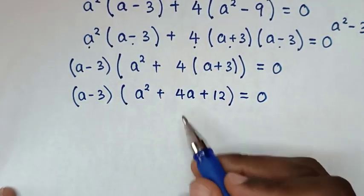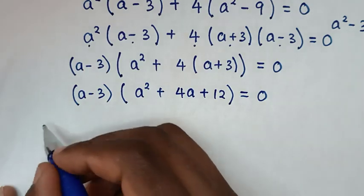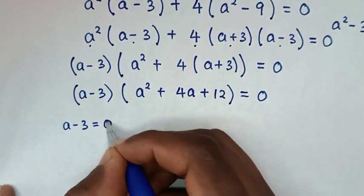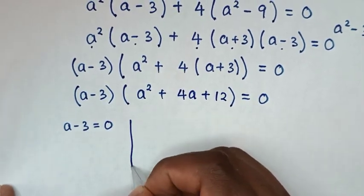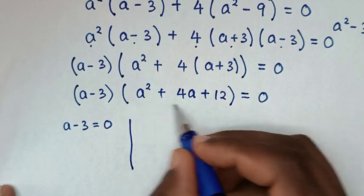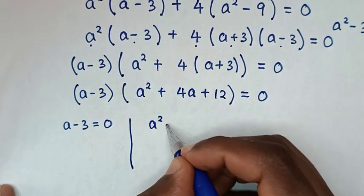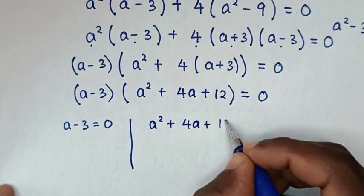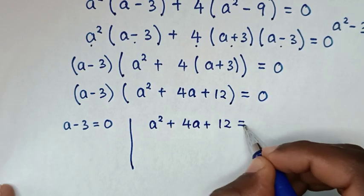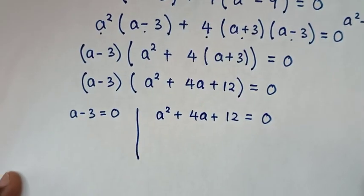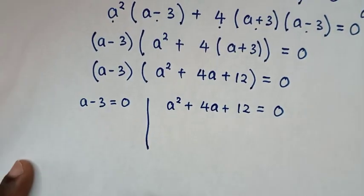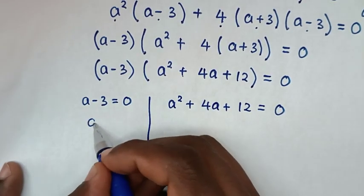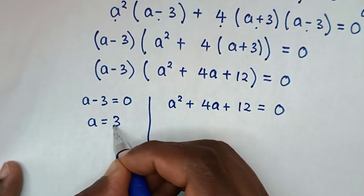From here we have two solutions. The first solution is a minus 3 equals 0, and the second solution is a squared plus 4a plus 12 equals 0. From the first solution, taking 3 to the right side gives a is equal to 3.